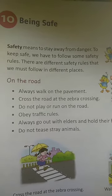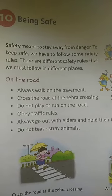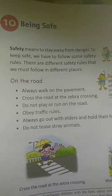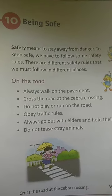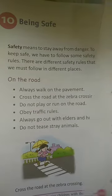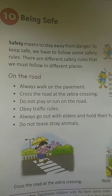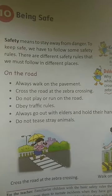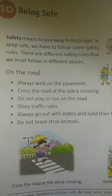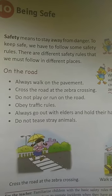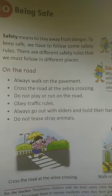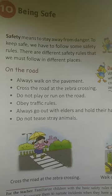There are different safety rules that we must follow in different places, like on the road, in the bus, in the school, on the ground, at home, in the playground, likewise in the swimming pool — there are so many places where we need to be safe. So let's learn about them one by one.